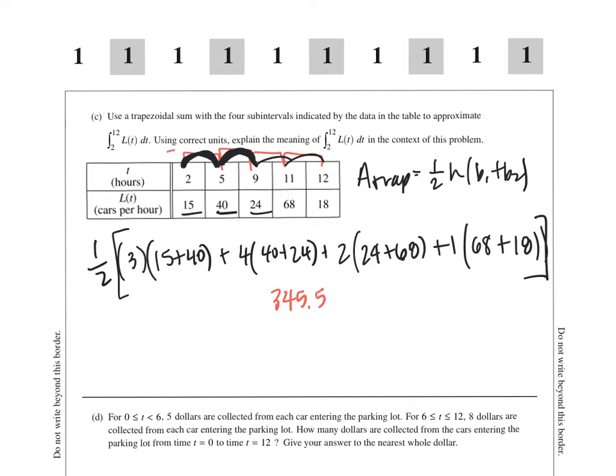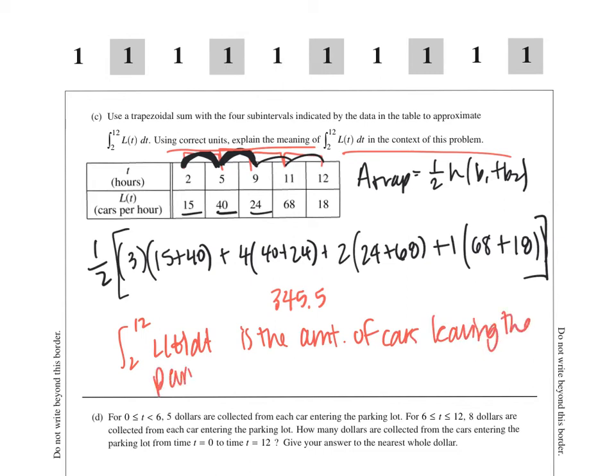And then they said we need to explain what the heck we just found in the context of this problem. And if we remember, what we're dealing with here is when you integrate that rate, you get a quantity. So my integral from 2 to 12 of L of T dt is the amount of cars leaving the parking lot from T equals 2 to T equals 12 hours, or over this 10-hour span.